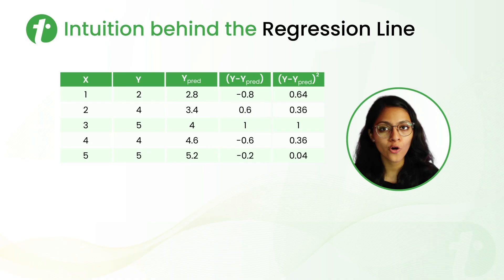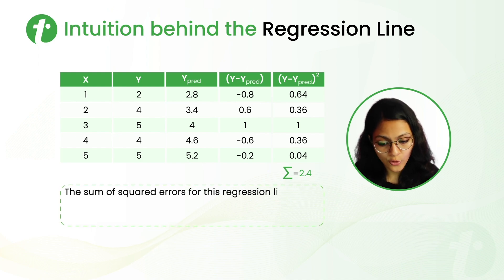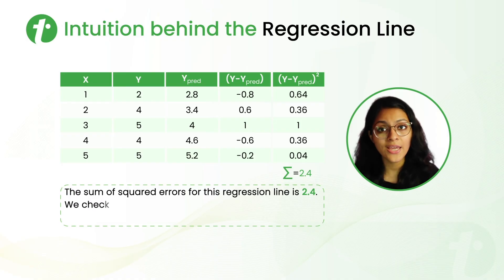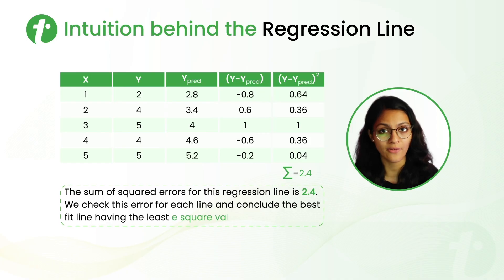And the best fit line should have the least sum of these squares which is also known as E square. Now, what we have to do for E square value? We have actual value of Y. We have predicted value of Y. We do the subtraction of these values and got the square of these values. And we will get some summation of these squares. The sum of squared errors for this regression line is coming out 2.4.